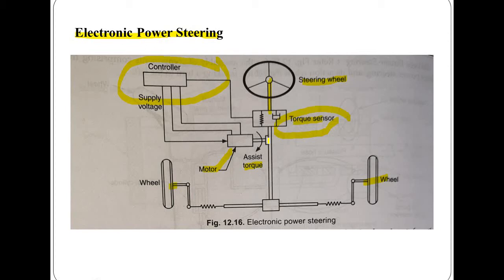The control unit then works out the appropriate command signal which is sent to the current controller. The electric motor receives the current form the current controller, starts operating, and pushes the rack towards right or left depending upon the direction of flow of current. The driving force is dependent upon the amount of current supply — higher the current, greater would be the push.